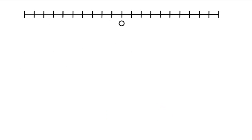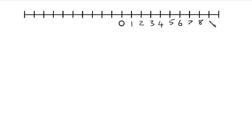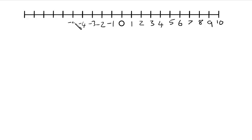So if we look at a number line, we're starting with 0, which is an integer. We can obviously add our whole numbers going up the number line in the positive direction — these are all integers. And then going down from 0, we've got negative 1, negative 2, and so on. These again are all integers.